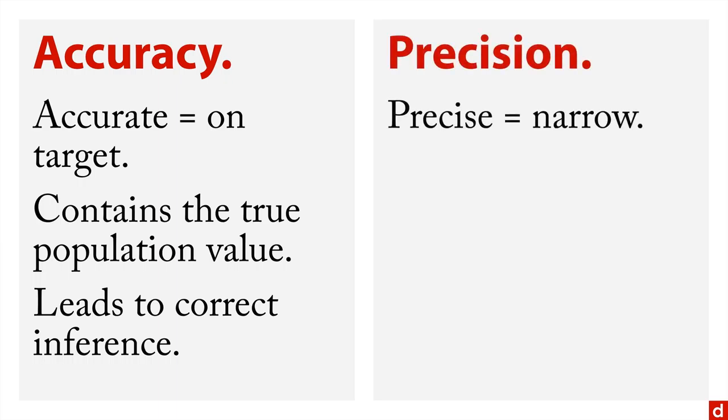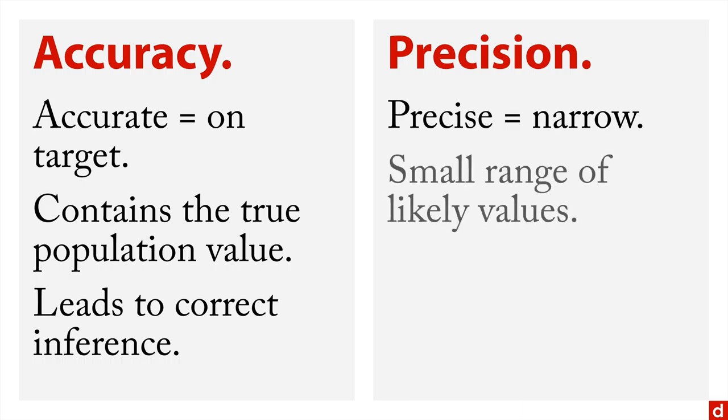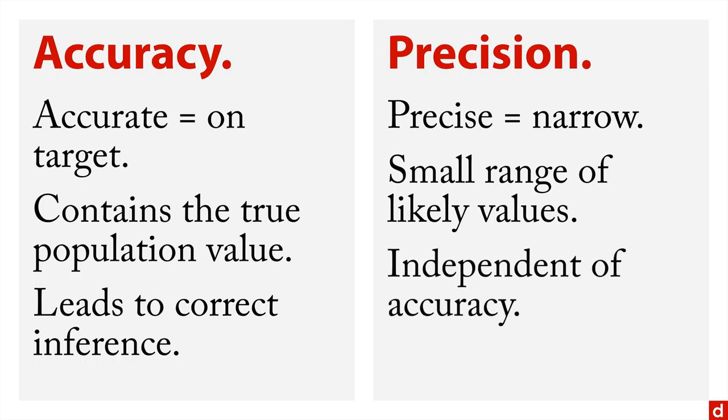Precision means a narrow interval, a small range of likely values. What's important to emphasize is this is independent of accuracy. You can have one without the other or neither or both. Let me show you how this works.